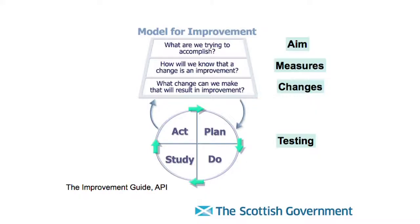So what is the model for improvement? Very simply, it's these three fundamental questions. First: what are we trying to improve or accomplish? So having a clear, stretched aim around what you're trying to improve. Second: how will we know that a change is an improvement? It's all about measuring it and providing evidence of whether things are working. Third: what changes can we make that will lead to an improvement? What are your ideas, theories, hunches? And it's using the Plan, Do, Study, Act cycle to test those theories at a small scale, then testing under multiple conditions to see if it's going to work and make things better at scale.